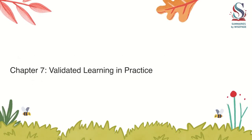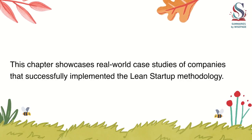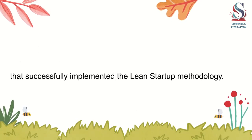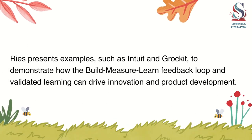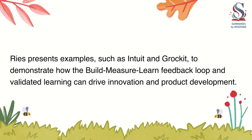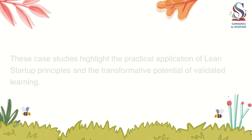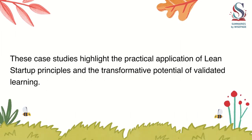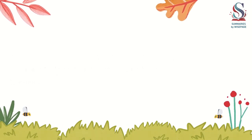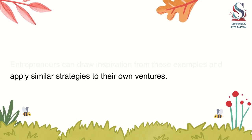Chapter 7: Validated Learning in Practice. This chapter showcases real-world case studies of companies that successfully implemented the Lean Startup methodology. Ries presents examples such as Intuit and Grokett to demonstrate how the Build-Measure-Learn Feedback Loop and validated learning can drive innovation and product development. These case studies highlight the practical application of Lean Startup principles and the transformative potential of validated learning. Entrepreneurs can draw inspiration from these examples and apply similar strategies to their own ventures.